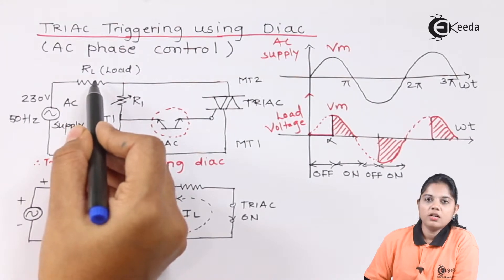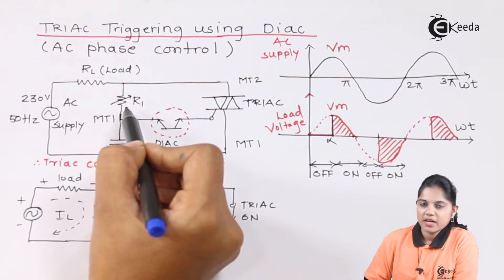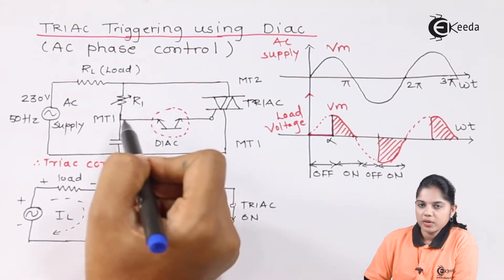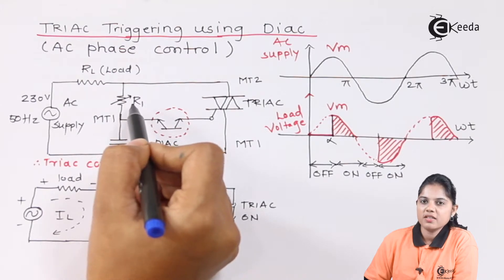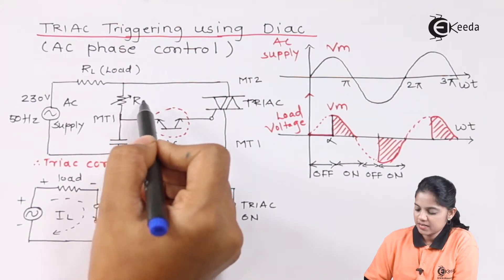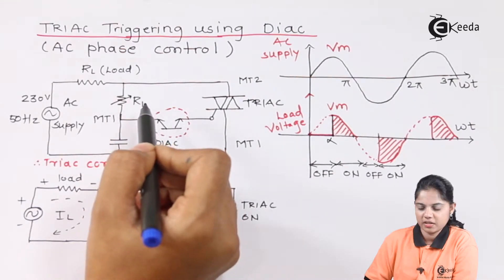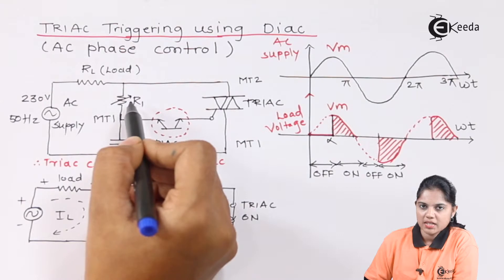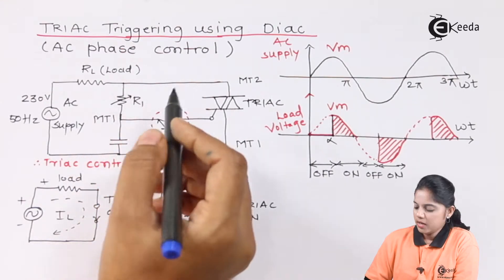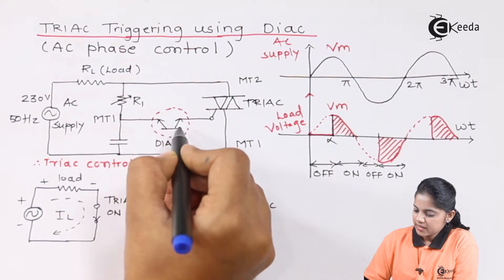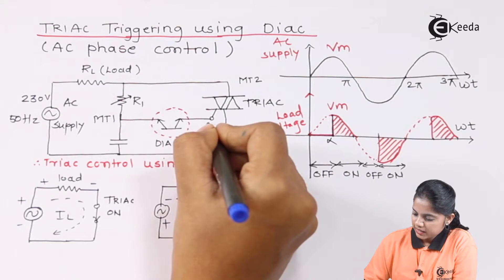One more resistance and capacitor pair is connected in the circuit. Here you can see R1 is a variable resistance — the value of this resistance is going to affect some parameter in the circuit. We can vary R1 for the purpose we want to attain. The DIAC is connected such that one terminal of the DIAC is connected directly to the gate terminal of the TRIAC.